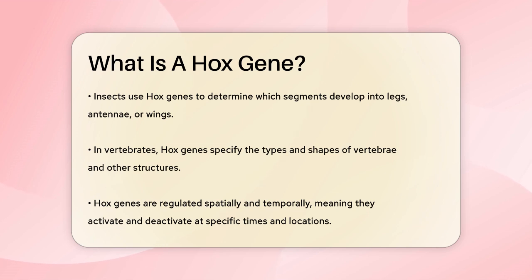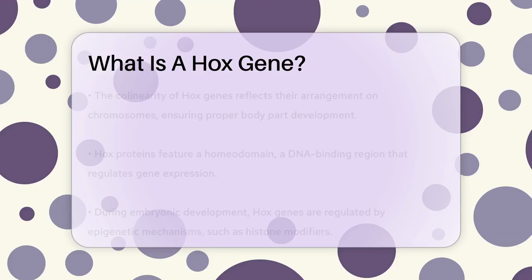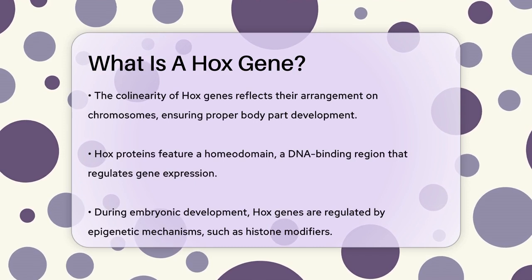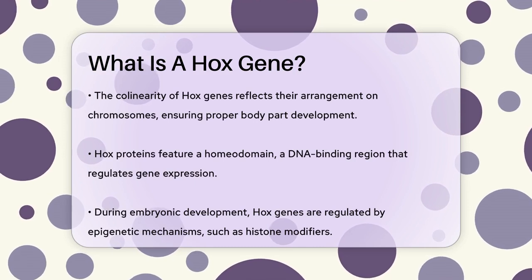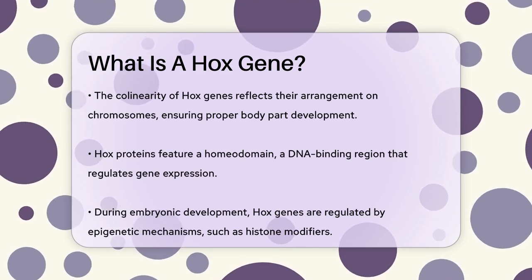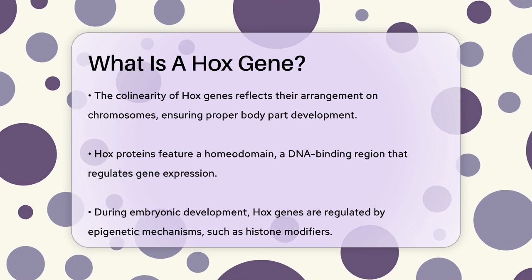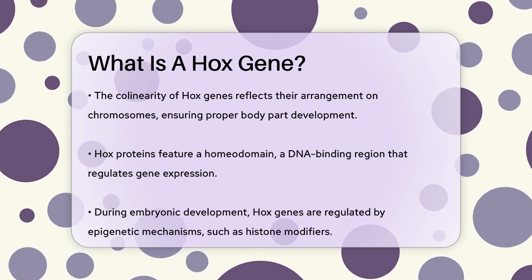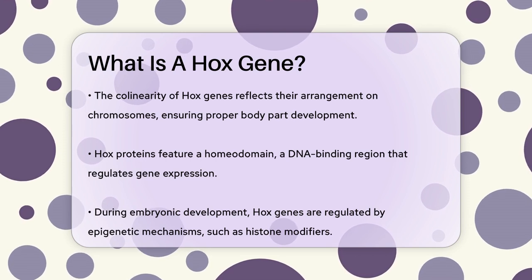This sequence mirrors their arrangement on the chromosome, ensuring that body parts develop in the correct order from head to tail. HOX proteins, the products of these genes, contain a special part called the homeodomain, which is a 60-amino acid long DNA binding domain. This homeodomain allows HOX proteins to bind to specific DNA sequences and either activate or repress the expression of other genes.